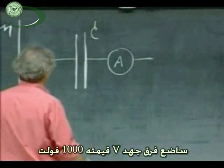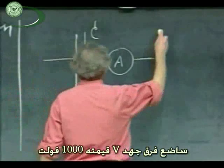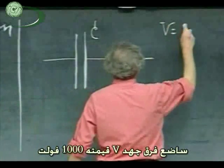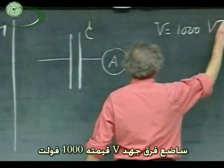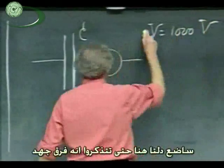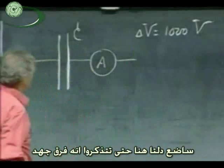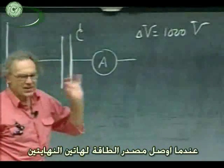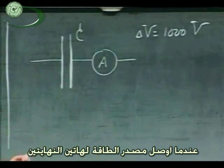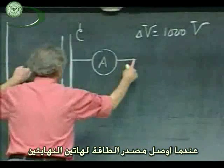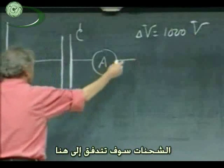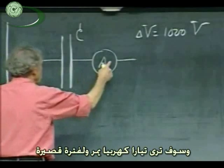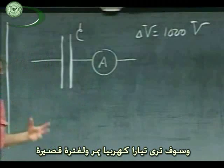For a capacitor, we use the symbol of two parallel lines. I am going to put a potential difference V of 1,000 volts over the capacitor. I'll put a delta here to remind you that there is a difference between the two plates. As I connect the power supply to these two ends, charge will flow on, and you will see a very short surge of current.